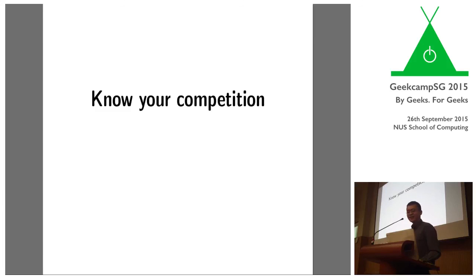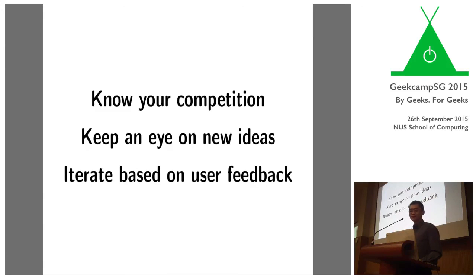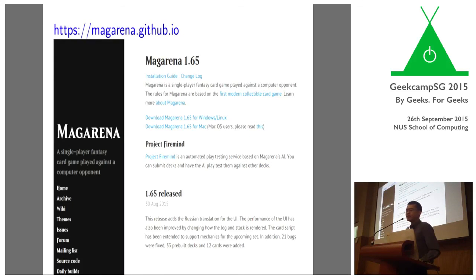Just to recap quickly: first, know your competition — the different programs or products in your space — and try to find new ideas from places people don't normally look, such as the academic research literature. Finally, listen to user feedback and make improvements. This is an open source project on GitHub — very much welcome to fork the project and send pull requests. It's written in Java, and all links from today's talk are updated on the website. You can also just Google for MageChari.